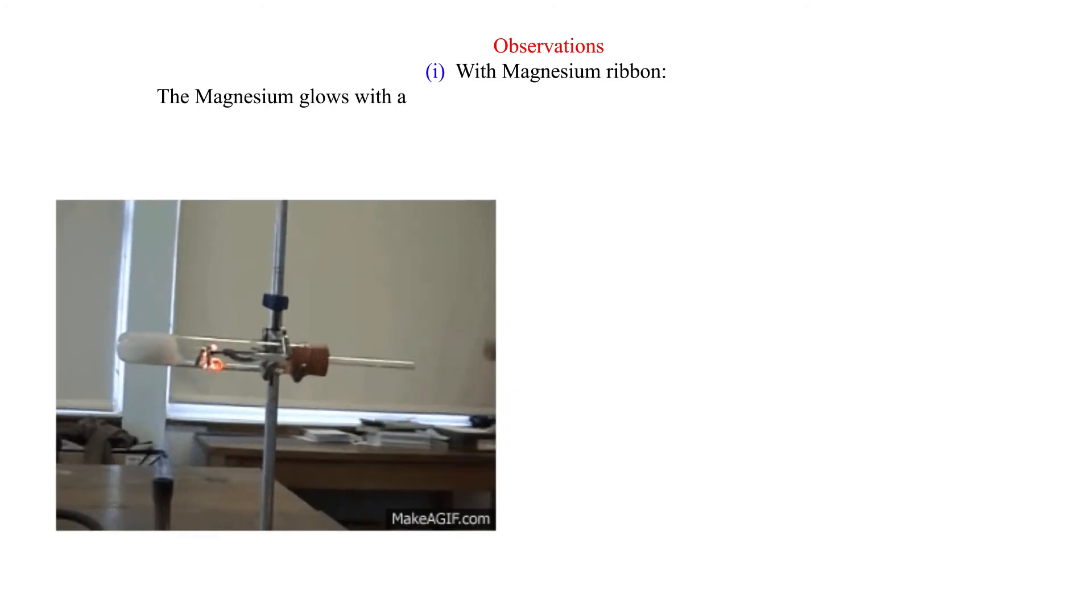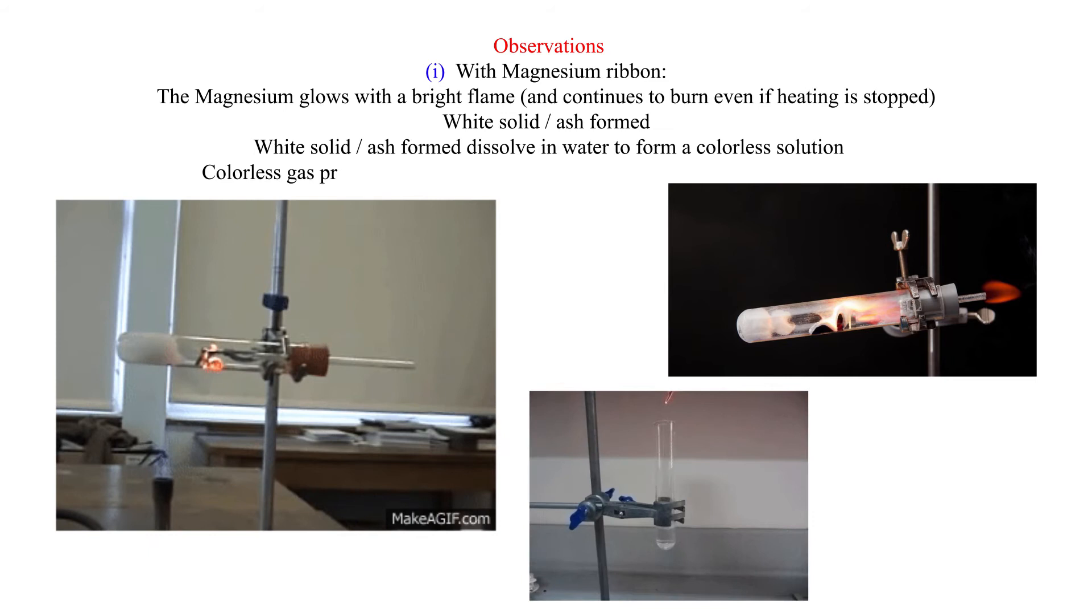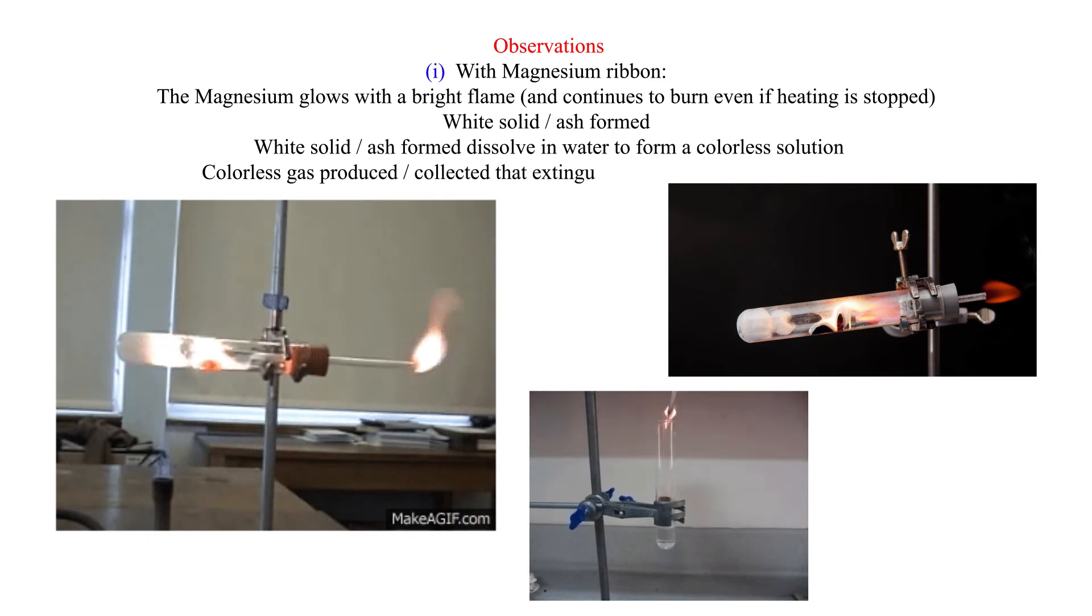Observations. With magnesium ribbon, the magnesium glows with a bright flame and continues to burn even if heating is stopped. White solid or ash formed dissolves in water to form a colorless solution. Colorless gas produced or collected that extinguishes burning splint with pop sound.